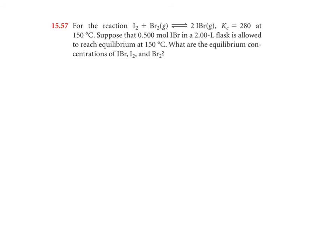For the reaction, I2 plus Br2 in equilibrium with 2IBr, the Kc is 280 at 150 degrees Celsius. Suppose that 0.500 moles of IBr in a 2 liter flask is allowed to reach equilibrium at 150 degrees Celsius. What are the equilibrium concentrations of IBr, I2, and Br2?